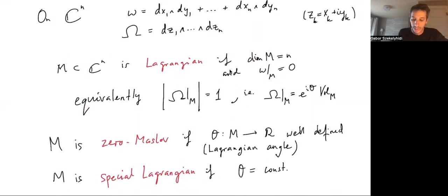It turns out that this is equivalent to saying that if we take this holomorphic n-form, restrict it to M, and then take its norm with respect to the induced metric, then this is 1. This is always less than or equal to 1, and that's equal to 1 exactly for Lagrangians.